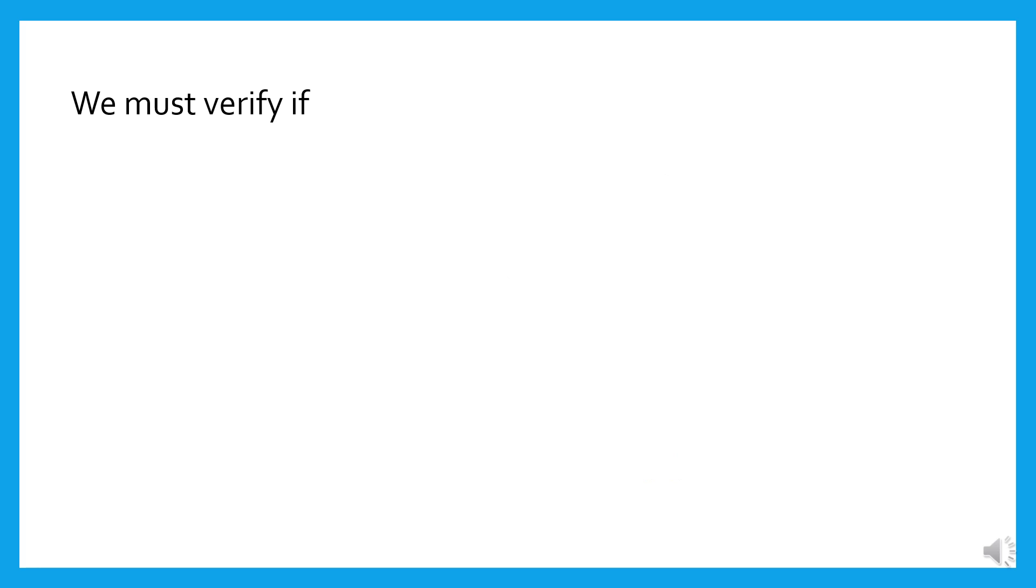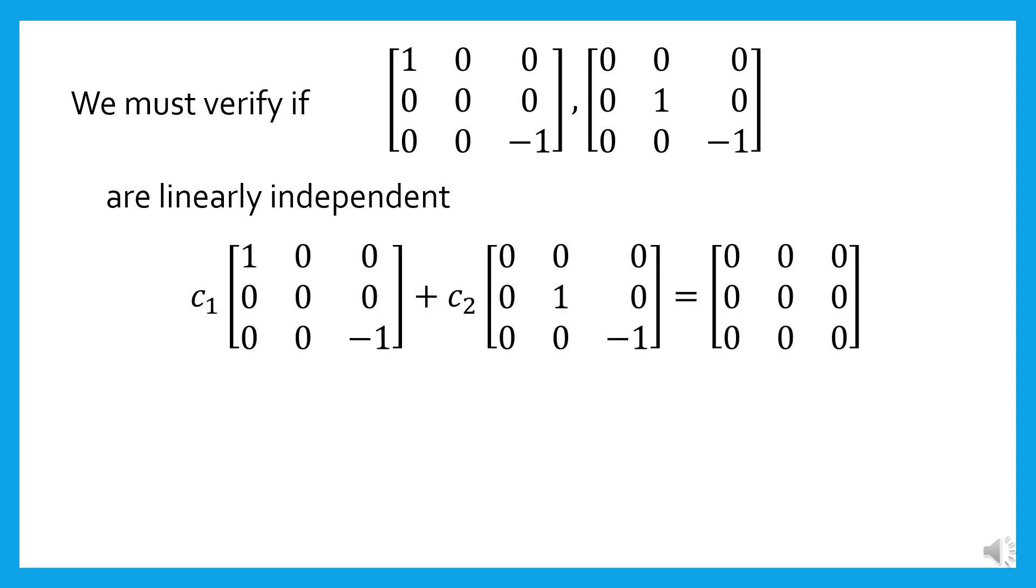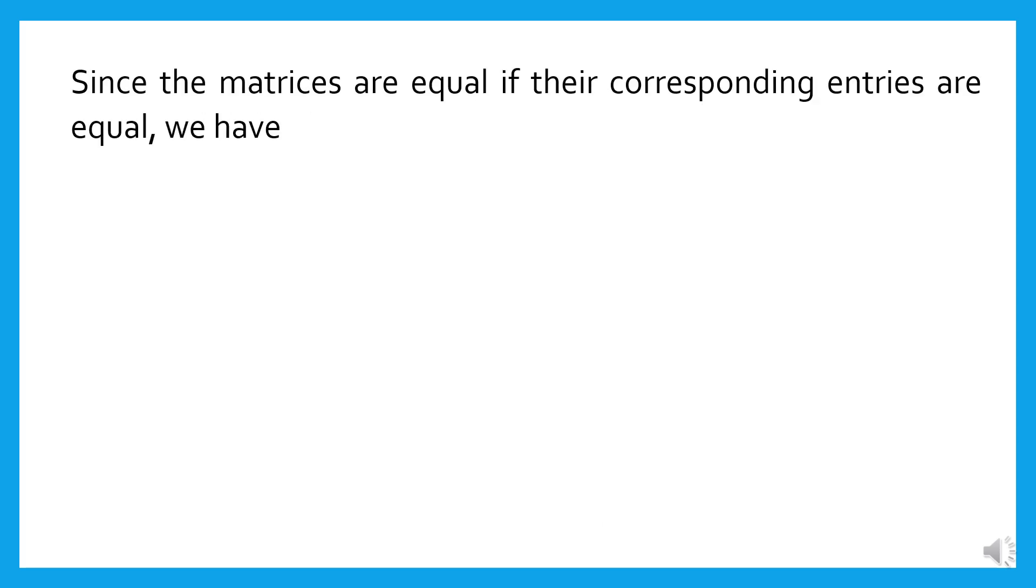We must verify if the two matrices are linearly independent. Since the matrices are equal if their corresponding entries are equal, we have c1 equals c2 equals zero.